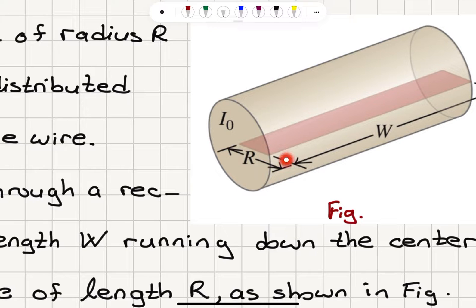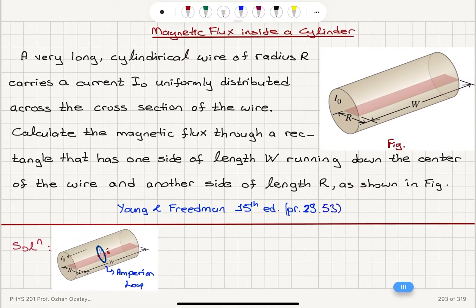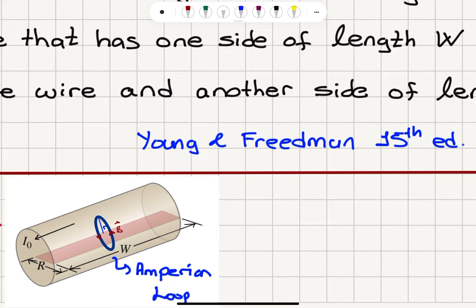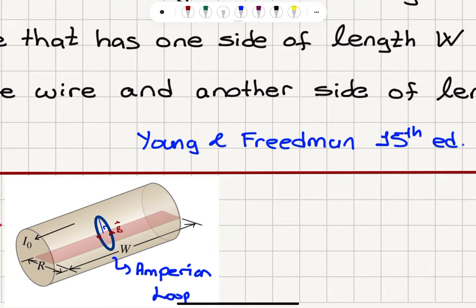This is basically half of the cylinder. For one radius, we have this rectangular region we want to calculate the magnetic flux in. To calculate the magnetic flux, I need to know the magnetic field through that rectangular region and integrate the magnetic field dot product with the infinitesimal area. Now, if the current is flowing in this direction, using the right-hand rule with the thumb pointing in the direction of the current, the four fingers curl counterclockwise — that's the direction of the magnetic field.